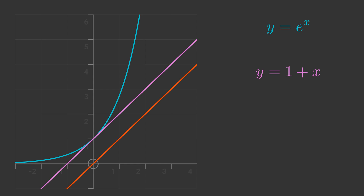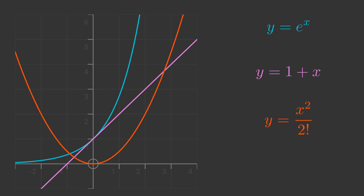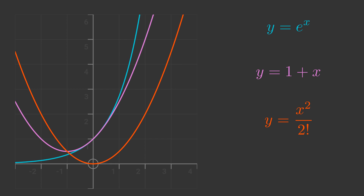The next term in the expansion is y equals x squared over 2 factorial. Here is the graph of that term. Our approximation is now y equals 1 plus x plus x squared over 2 factorial. This has the correct value when x is 0, the correct slope at that point, and the second derivative is also correct at that point. This is a slightly better fit — it is a quadratic curve that matches the exponential function when x is close to 0.